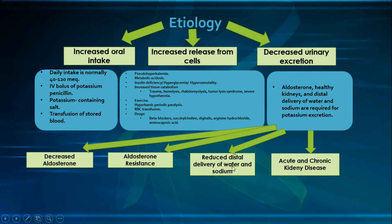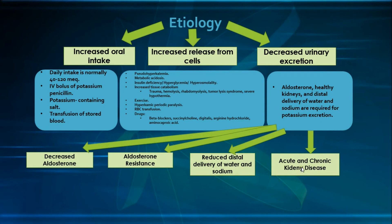Reduced distal delivery of water and sodium is basically due to decreased effective circulating volume or effective arterial blood volume. A decreased effective circulating volume is not necessarily due to hypovolemic shock; it could be due to cardiogenic shock, where you have normal blood volume but decreased cardiac output, so blood is not perfusing the tissues such as the kidneys. Finally, acute and chronic kidney disease most commonly causes hyperkalemia through oliguria causing decreased urinary potassium excretion and decreased secretion and responsiveness to aldosterone.